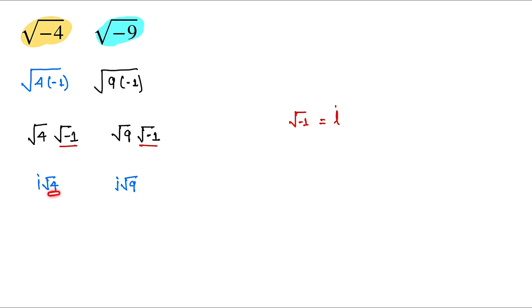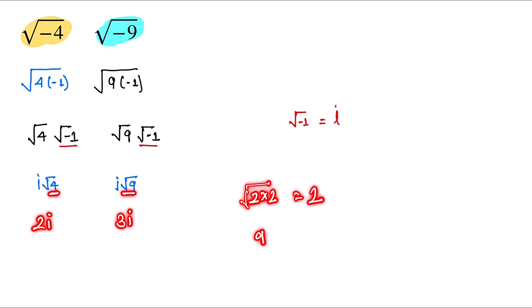Now the value of under root 4 is equal to 2, so here we have 2i. And under root 9 is equal to 3, so here we have 3i. We know that under root of 2 into 2 gives 2, and under root of 3 into 3 gives 3.